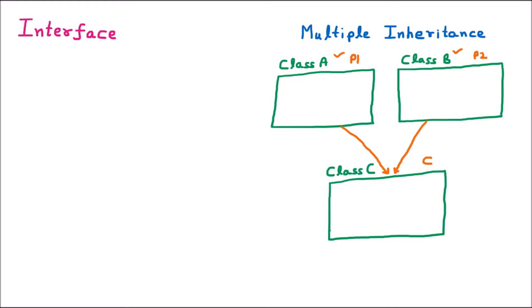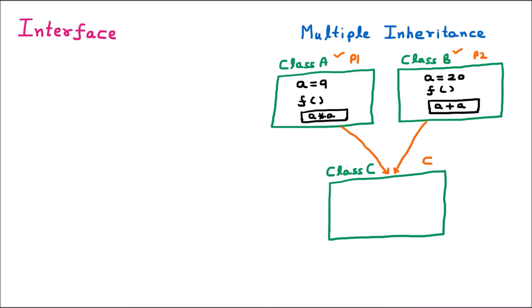Let us assume that in class A we have a variable A with value 9, and also a function named F whose body displays A squared — that is, A into A. Now in class B we have the same variable A but with value 20, and the same function name F, whose body calculates A plus A.